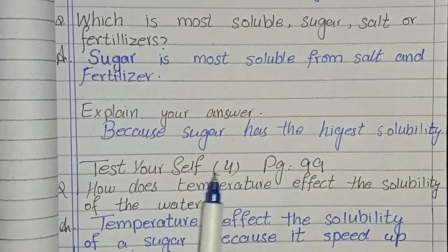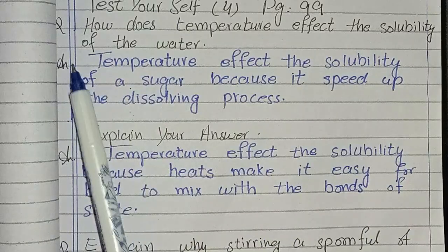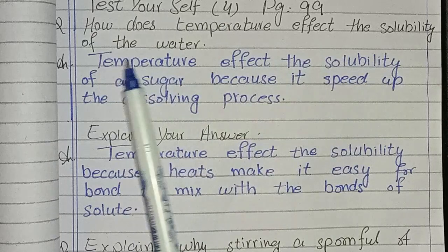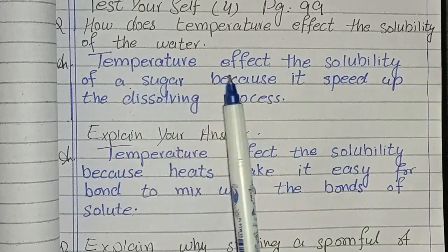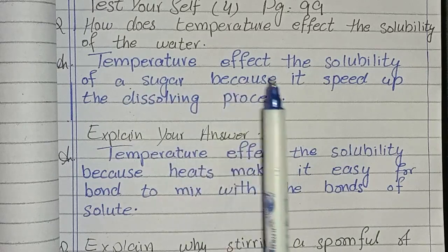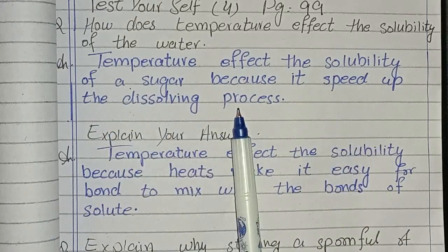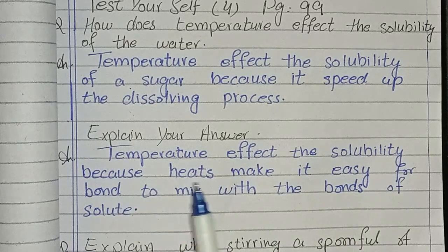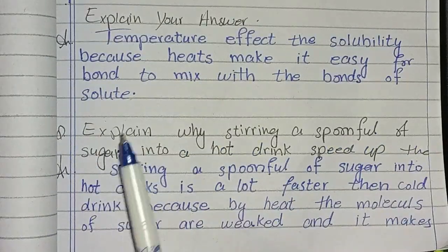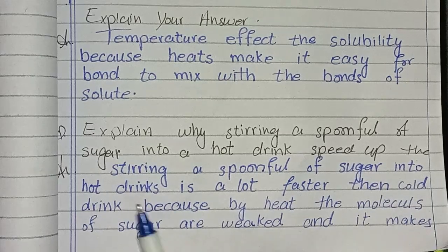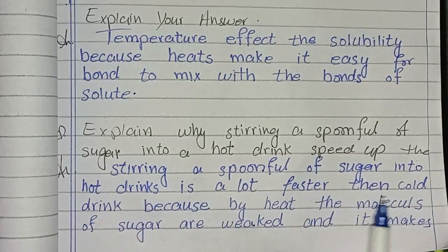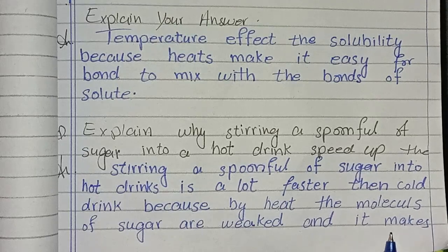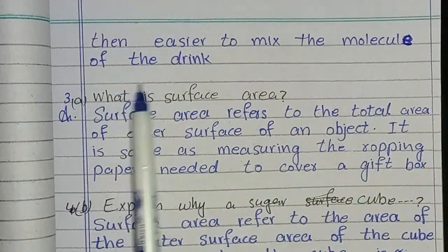Page number 99, Fourth Test Yourself. First question: how does temperature affect the solubility in water? Temperature affects solubility because it speeds up the dissolving process — heat makes it easier for bonds to mix with the bonds of the solute. Next question: how does stirring affect solubility? Stirring a spoonful of sugar into a hot drink is a lot faster than into a cold drink, because heat weakens the molecules of sugar, making it easier to mix the molecules of the drink.